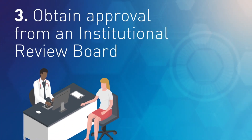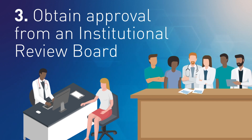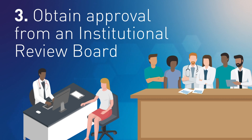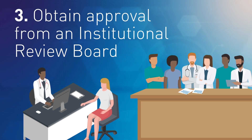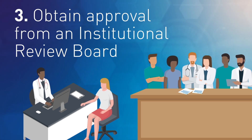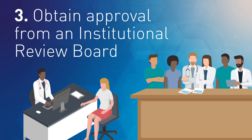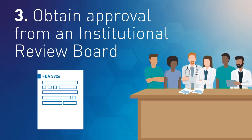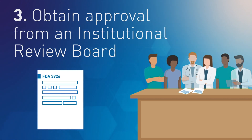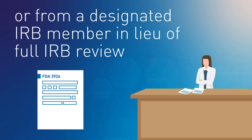Step three: obtain approval from the Institutional Review Board. For a non-emergency IND, you must obtain approval from an institutional review board prior to treating a patient under expanded access. This is an important step to protect the rights and safety of patients. However, we recognize that assembling the full board may cause delays if the board does not routinely meet. On form FDA 3926, you can indicate that you will obtain concurrence from the IRB chairperson or from a designated IRB member in lieu of full IRB review.